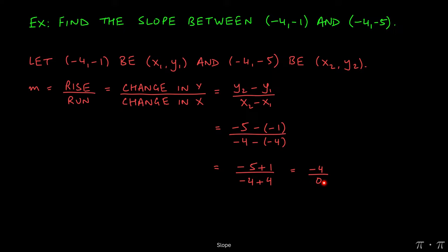Now, hopefully you remember, division by 0 is illegal. We can't do it. This was the case where the slope was undefined, since we can't get a nice number for the answer.